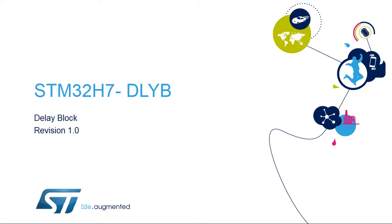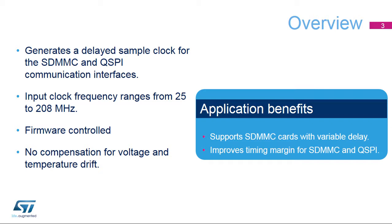Hello, and welcome to this presentation of the Delay Block Module. The Delay Block Module, integrated inside STM32H7 microcontrollers, is used to tune the received data sampling clock for the SD, STIO, MMC card host interfaces, or SDMMC, and Quad SPI Memory Interface, or QSPI. It is mandatory for use with SDMMC Ultra High Speed, or UHS-I interface cards, having a variable delay.